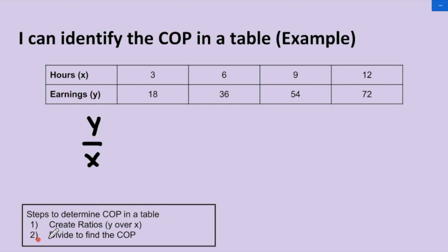And then step two is to divide to find the COP. So notice in the table, the bottom row is going to be the y values and the top row is going to be the x values. So in order to create ratios or fractions, in the first column, the y is 18 and the x is 3.